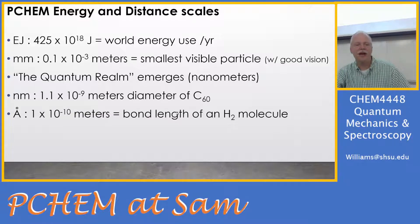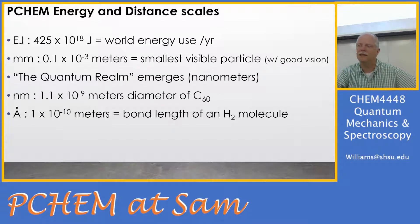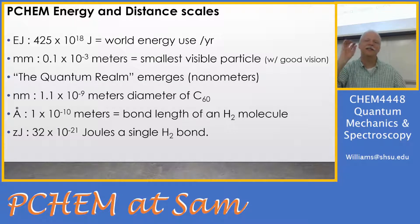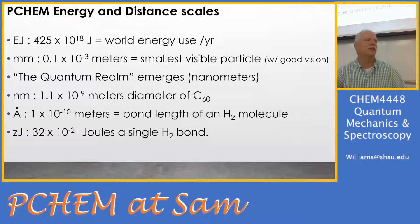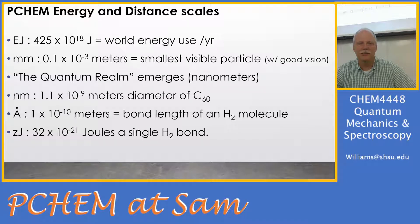Then we get into angstroms — that little A with a circle on top, which is 10 to the minus 10 meters. That unit was introduced because that's the atomic bond length scale. At the smallest energy scale, a single H2 bond is 32 zeta-joules. So we go from zeta to exa, which is an enormous range of energy across this year.